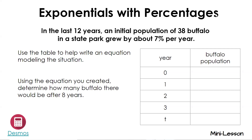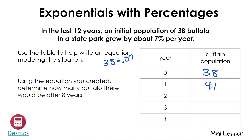In the last 12 years, an initial population of 38 buffalo in a state park grew about seven percent per year. Use the tables to help write an equation modeling the situation. Initially we have 38 buffalo. We're going up by seven percent, so take 38 and multiply it by 0.07. That gives us 2.66 — we can't have half a buffalo, so we round up. Adding 2.66 to 38 gives us 41.